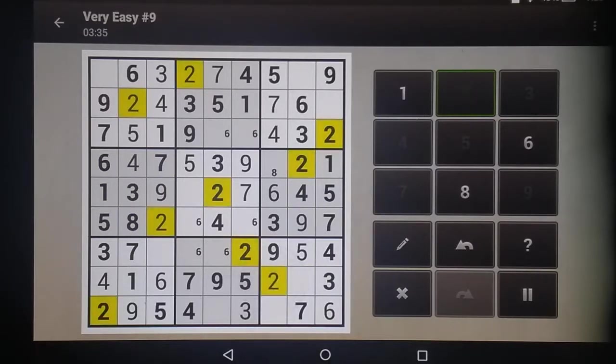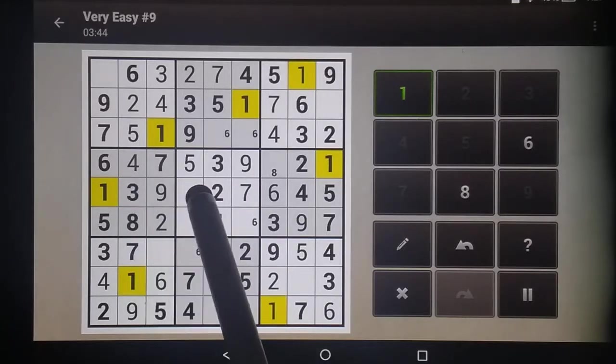This and this are eliminated, so there's our 2. And this eliminates that one, so there's that one. This now eliminates that one. There's that one. This is eliminated here. This one's eliminated here. So there's that.